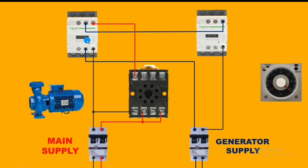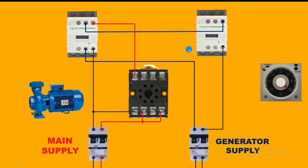If the main power supply comes, first the timer will operate, and after completing the delay time, the main contactor will operate. If the main power supply is cut, the main contactor goes to stop condition and automatically operates the generator power supply — because the generator contactor operates only when the main contactor is in stop condition.